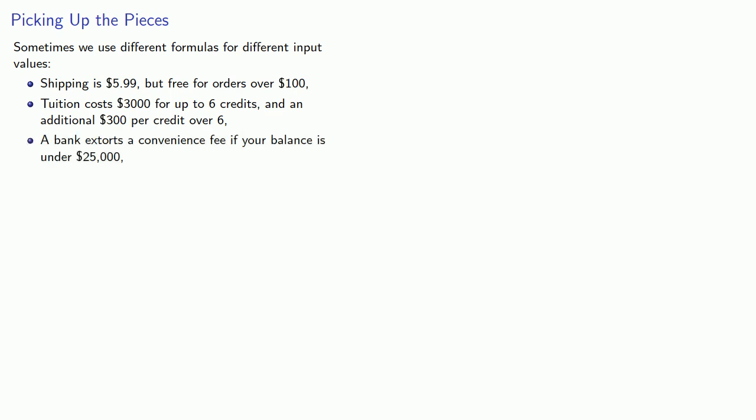Sometimes we use different formulas for different input values. For example, maybe shipping is $5.99 but free for orders over $100. Or maybe tuition costs $3,000 for up to 6 credits and an additional $300 per credit over 6. And your bank might extort a convenience fee if your balance is under $25,000.